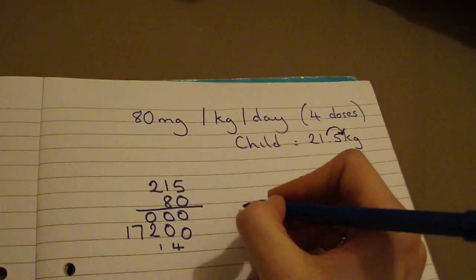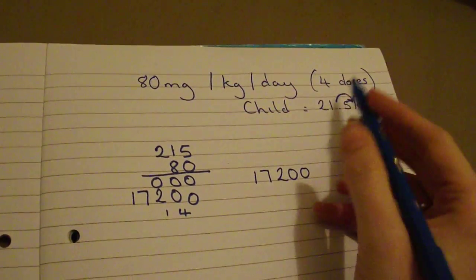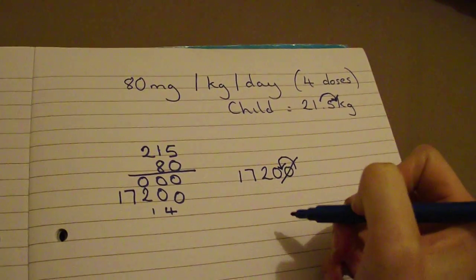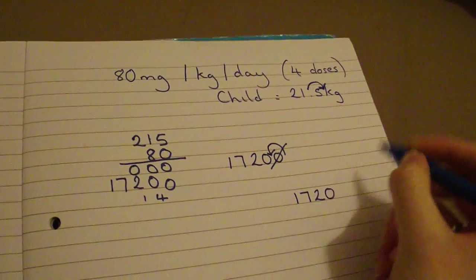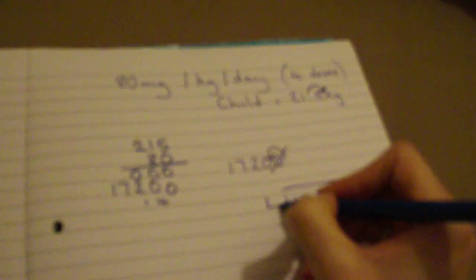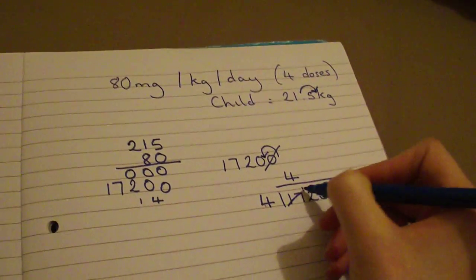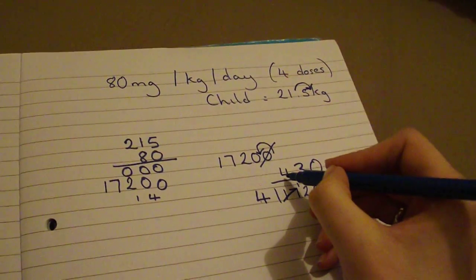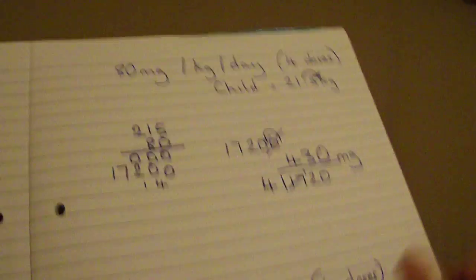So you end up with 17,200. But remember, you've taken a decimal point out so you must put the decimal point back in — that knocks off that zero, leaving you with 1720. You then divide by 4: 4 into 17 is 4 remainder 1, 4 into 12 is 3, and then you've got your zero left, so your answer is 430 milligrams per dose.